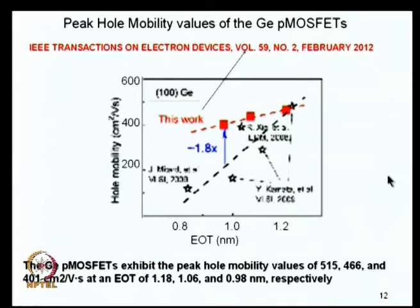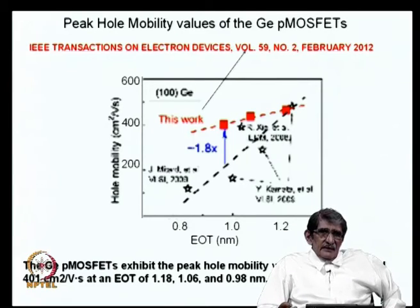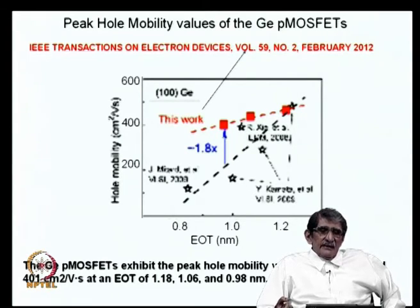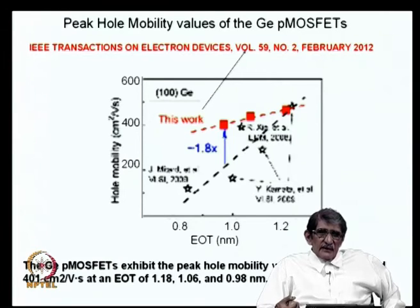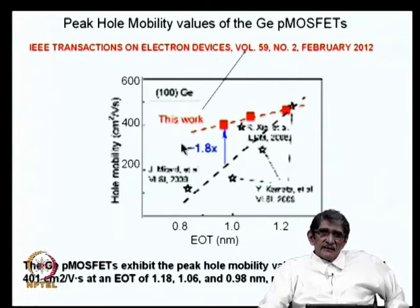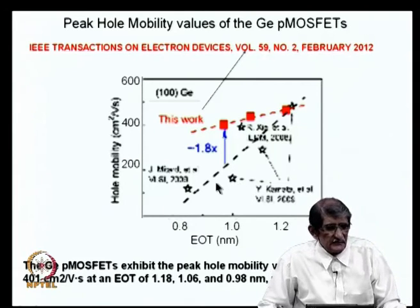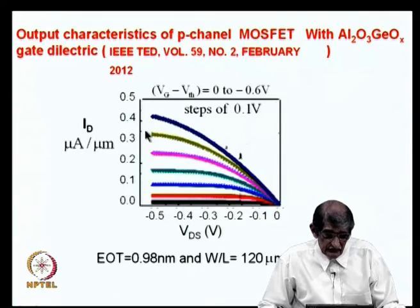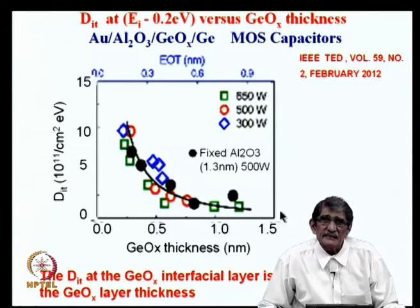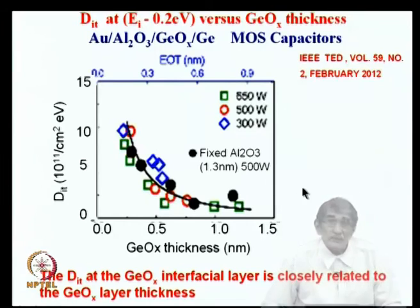The mobility is correlated with interface state density: when interface states are present, they respond to changes in gate voltage, reducing the effective channel charge change and therefore transconductance and drain current. Reducing interface state density is critical. There is still some interface state density present and significant scope for further improvement.